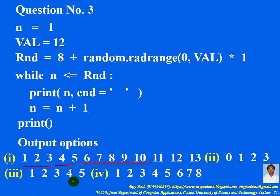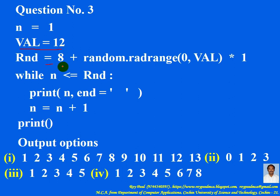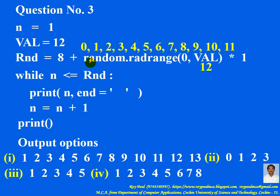Out of these four options, which is the best output of this program? Execution of a Python program starts at the main function. So variable n points to 1, and variable val points to 12. random.randrange(0, val) — since val contains 12 — randrange(0, 12) returns a random integer between 0 and 11. So here you get a random integer between 0 and 11.